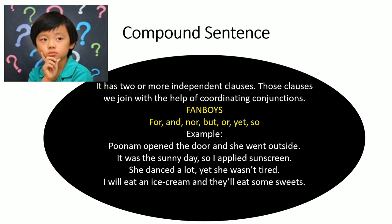'I will eat an ice cream and they will eat some sweets.' Here 'I' is the subject and 'eat' is the verb; 'they' is the subject and 'eat' is the verb — so again we have two subjects and two verbs. The coordinating conjunction is 'and.' I hope you have now understood what independent clauses are, and what simple and compound sentences are. Do more practice and you will understand it more.